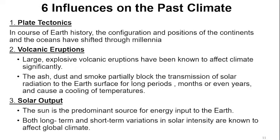We've also had volcanic eruptions. As volcanoes erupt, they throw large amounts of ash, dust, and smoke, and sometimes these remain suspended in the atmosphere for very long periods of time. As a result, they can partially block the transmission of solar radiation to the Earth's surface for months or even years, causing a cooling of temperature and therefore some natural climate change.